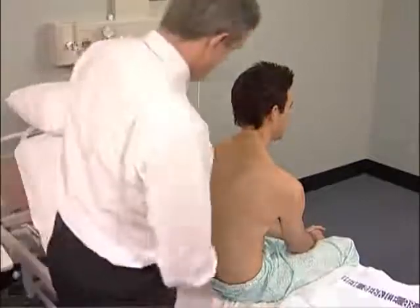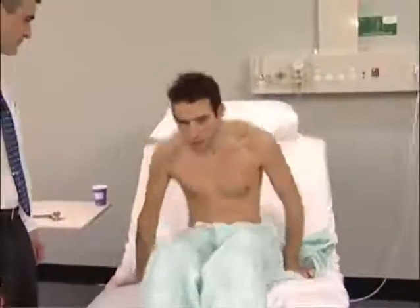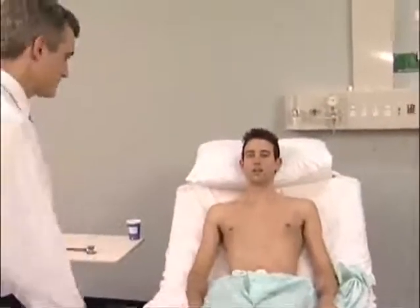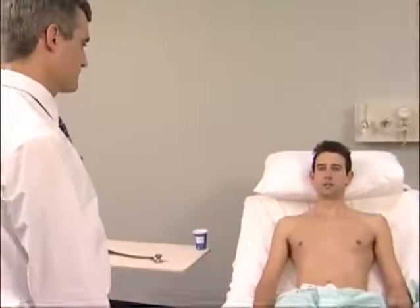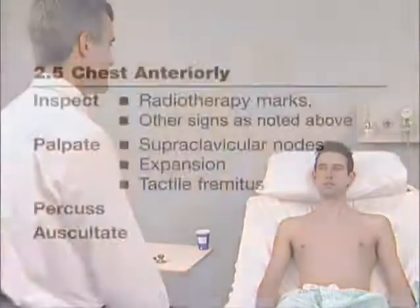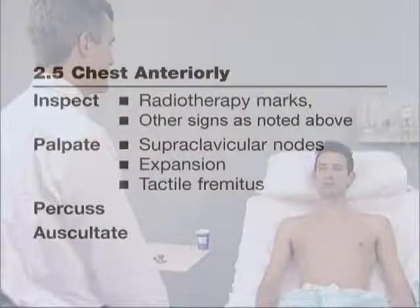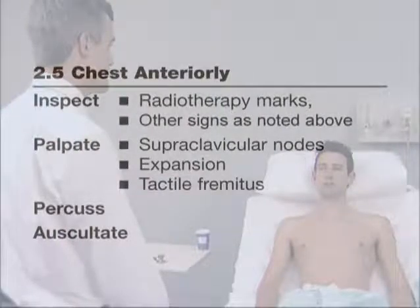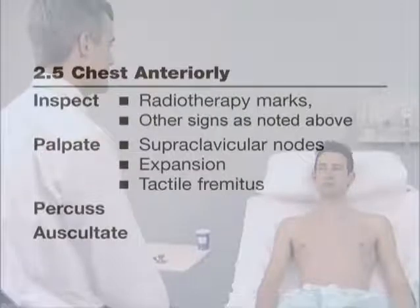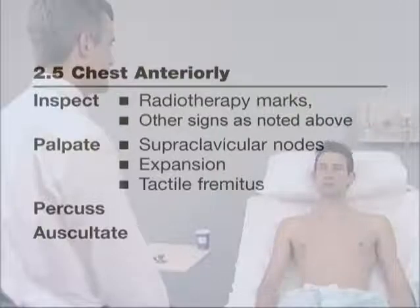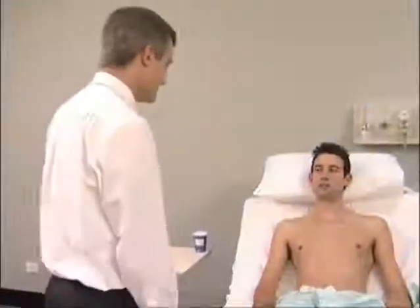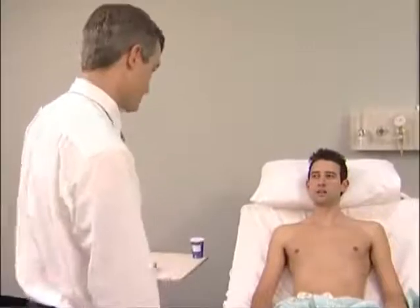Now get the patient back in bed. The examiner moves around to the front of the chest and stands back to make a general inspection for scars and for the small tattoos used as markers for radiotherapy fields. The skin may appear erythematous if the area has received a course of radiotherapy. The supraclavicular nodes are examined here if this has not been done from behind. Expansion of the upper chest is best assessed by inspection.